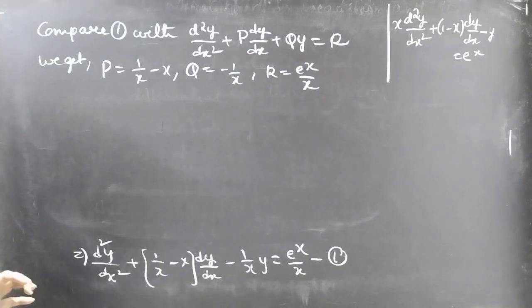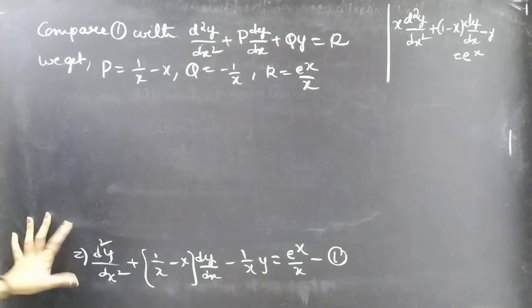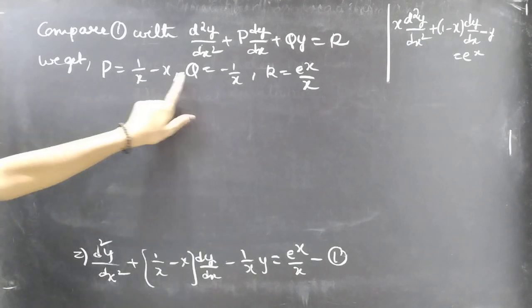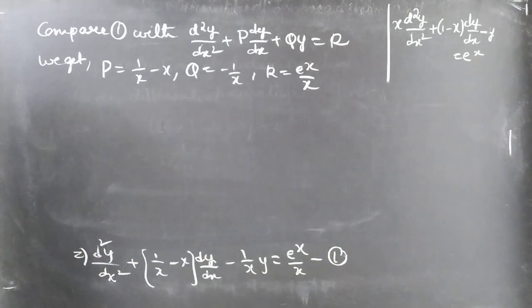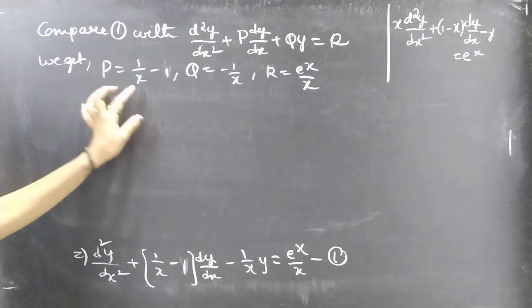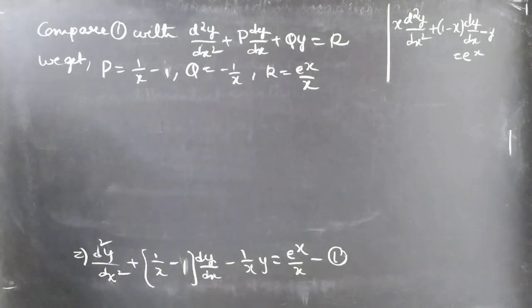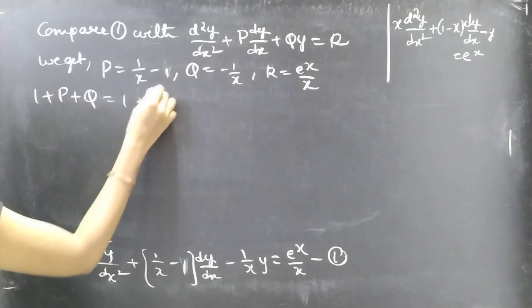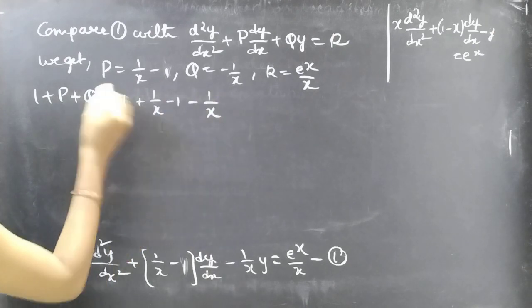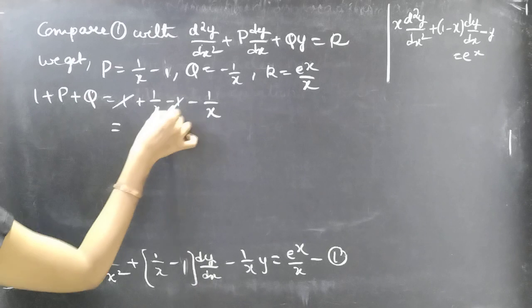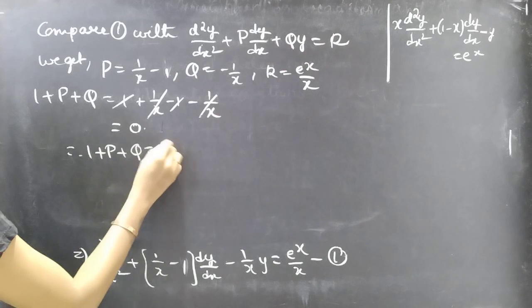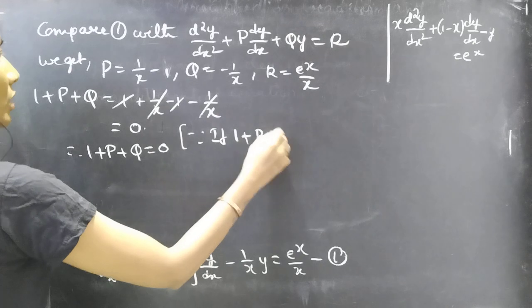Now we need to find part of the complementary function of equation 1 using the inspection method. We observe P = 1/x − 1 and Q = −1/x. Let's try 1 + P + Q, which equals 1 + (1/x − 1) + (−1/x) = 1 + 1/x − 1 − 1/x = 0. Therefore 1 + P + Q = 0.